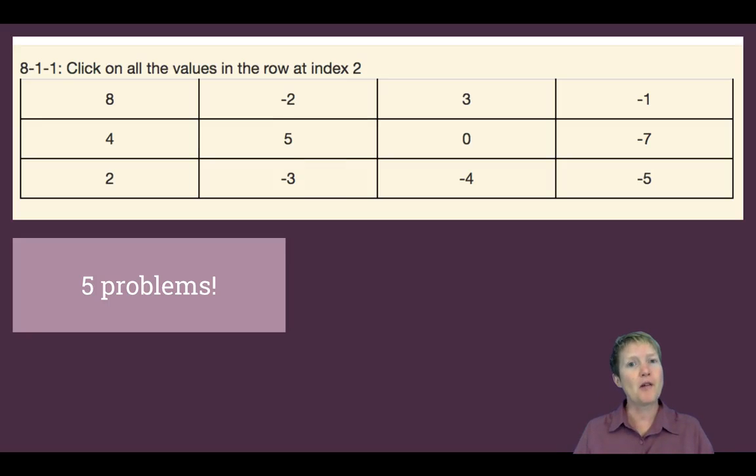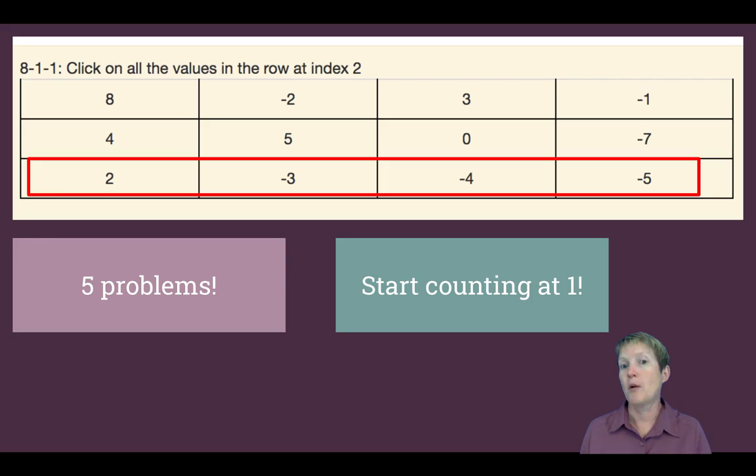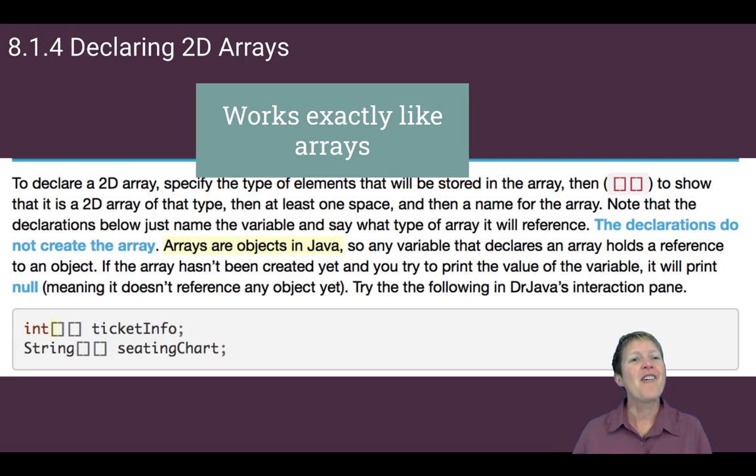But in that section, there are some good problems that you can do, five of them that are really cool. And they basically say, hey, here's a two dimensional array of things. Click on all the values in the row at index two. Did you remember? Oh, we don't start counting at one. We start counting zero. I'm sorry. Just mentally change that to a zero in your head. Right? So all the ones at two, zero, one, two, those are the ones you would want to click on.